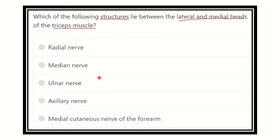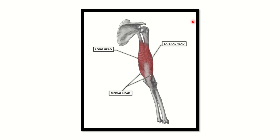We have to find out which nerve lies between the lateral and medial head of the triceps, since all the options are nerves. In this picture we can see the triceps muscle. We know that the triceps muscle inserts into the olecranon, and here we can see the different heads of the triceps.